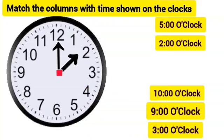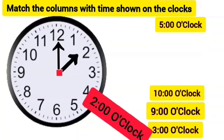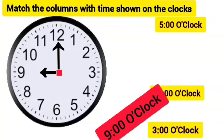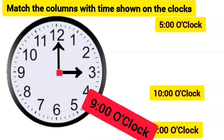In the next clock, the shorter hour hand is on 2 and the minute hand is on 12. These needles are showing the time of 2 o'clock. In the next clock, dear children, the shorter hour hand is on 9 and the longer minute hand is on 12. These needles are showing the time of 9 o'clock.